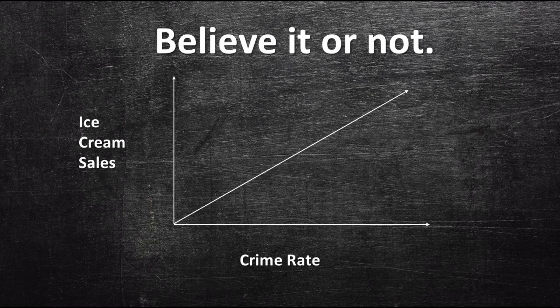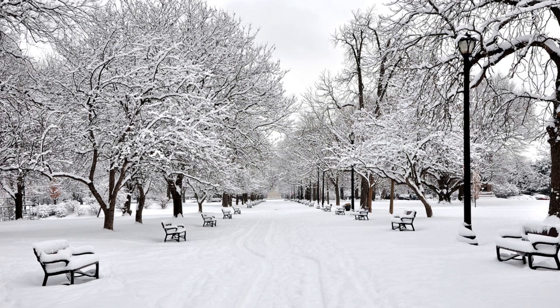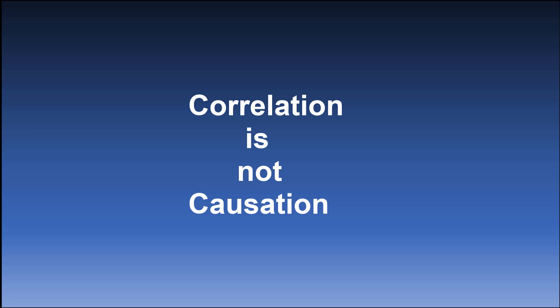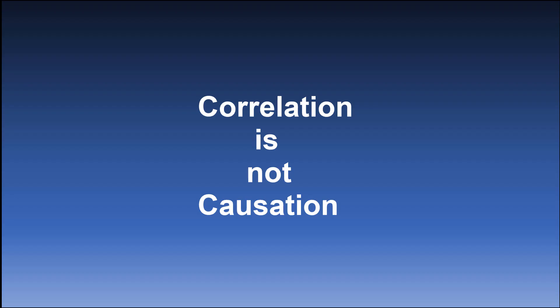Another great example is that there is a positive correlation between ice cream sales and crime rate — when ice cream sales increase, so does the overall crime rate. This isn't because people are getting violent from a sugar high, nor because crime victims are eating ice cream to feel better. It usually has to do with weather: during summer, it's hot so people eat more ice cream, and the nice weather also means more people are outside, which can lead to an increase in crime. Even though these two things are correlated, they do not cause one another. So the next time you hear about a connection between two things, remember that correlation is not causation — ask yourself what confounding variable may be causing the results.